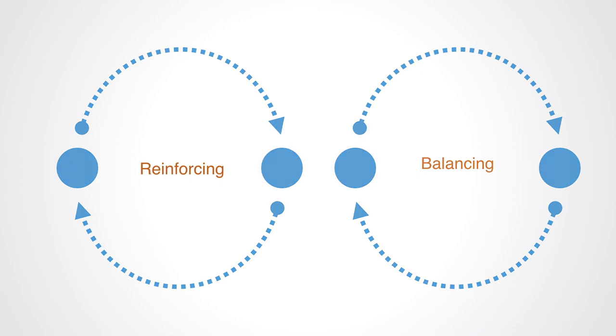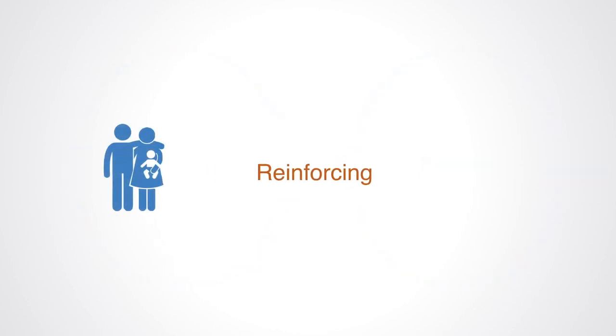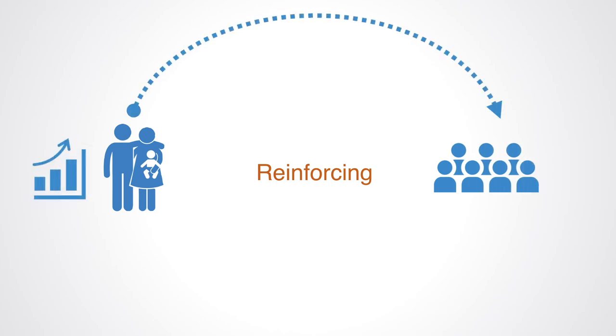An example of a reinforcing feedback loop is one of births and population. The positive relationship from births to population also works the other way around. The higher the population, the more births there will be, all else equal.